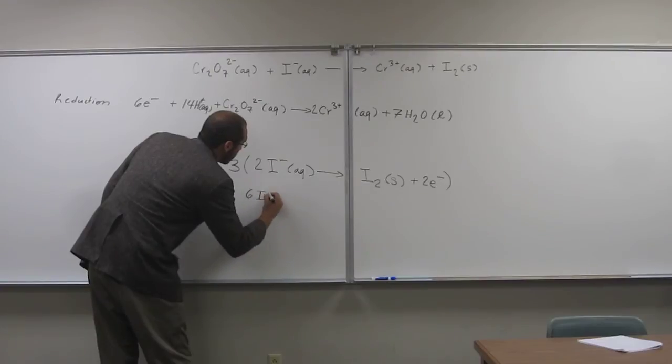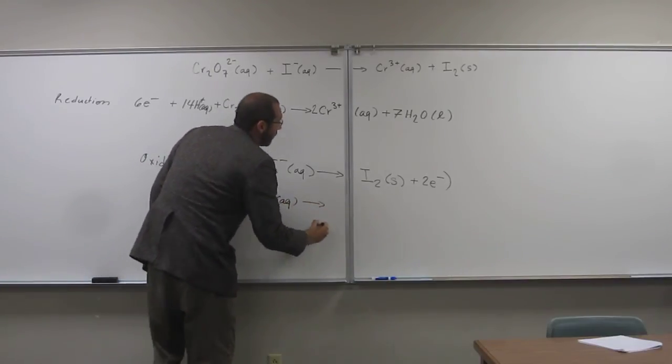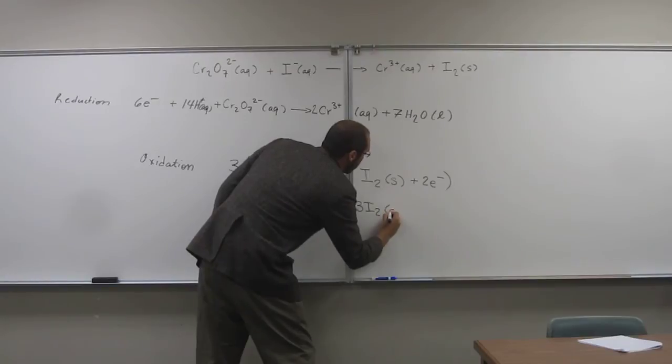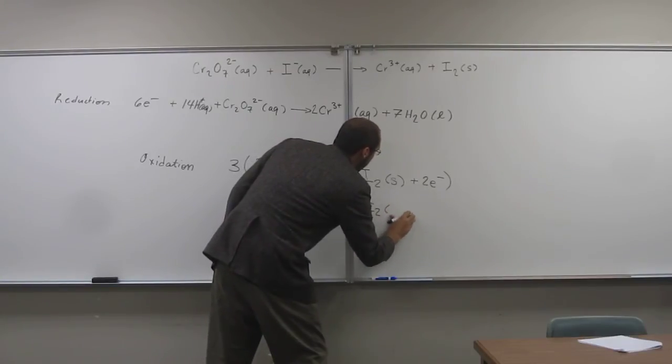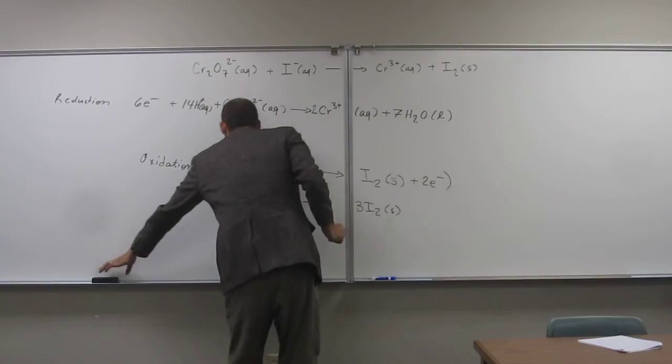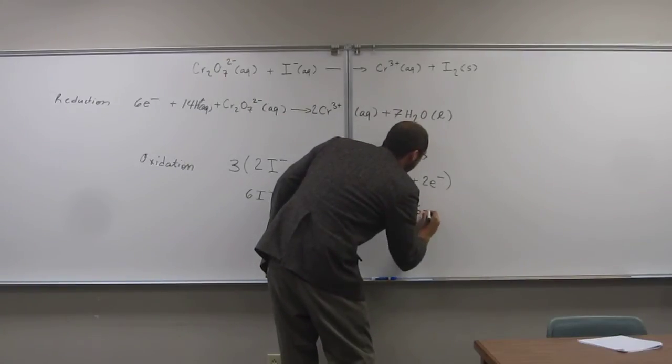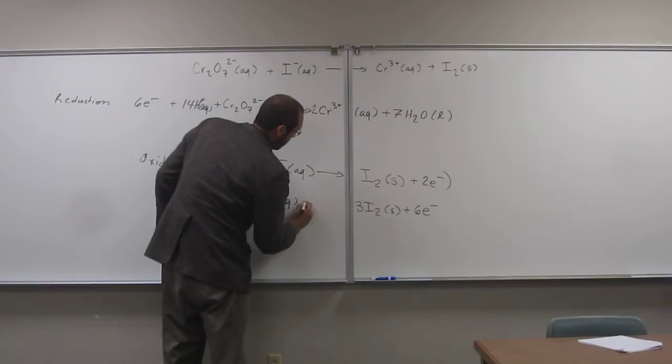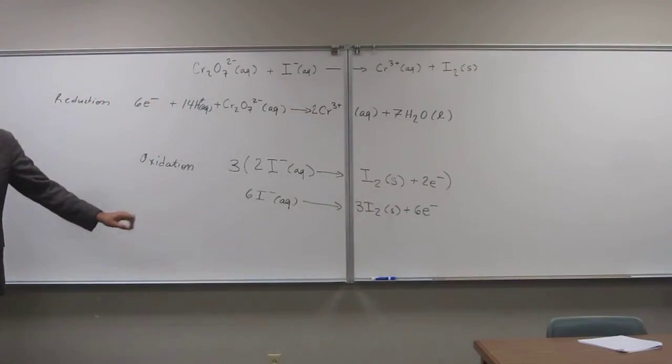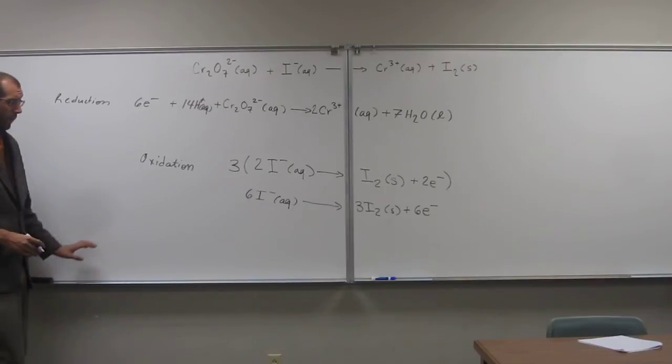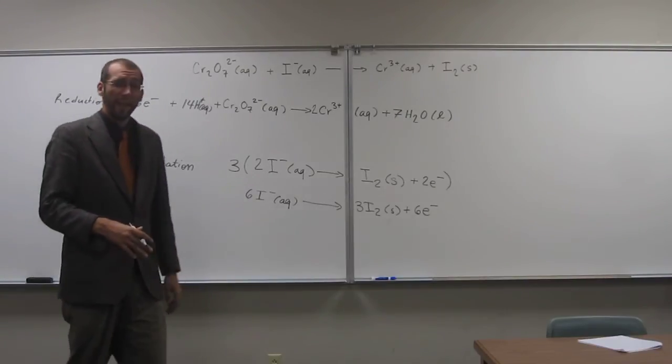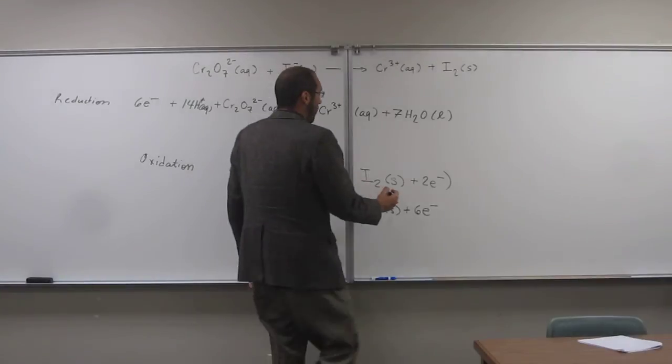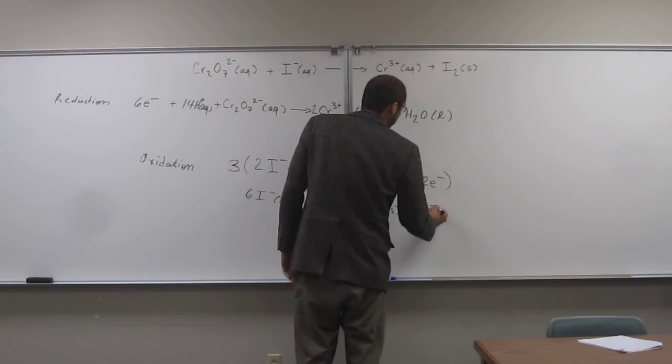So it's going to be 6I minus aqueous goes to 3I2 solid, plus six electrons, like that. You good with that? And then, remember, what are we doing? We're adding these two things up. And in order to do that, we want to make sure the electrons that are transferred are the same on both sides. So we see that this has six, that has six, and we're just going to cancel those things out.